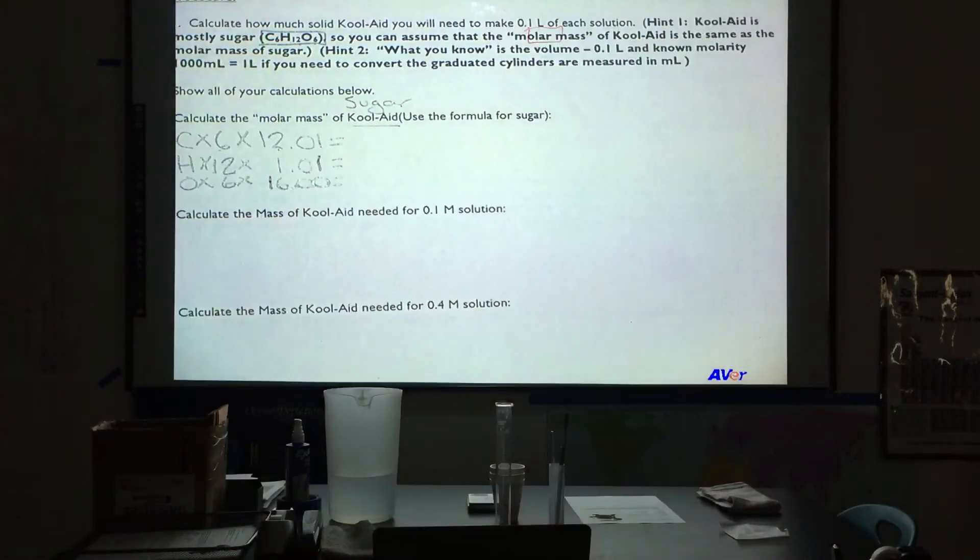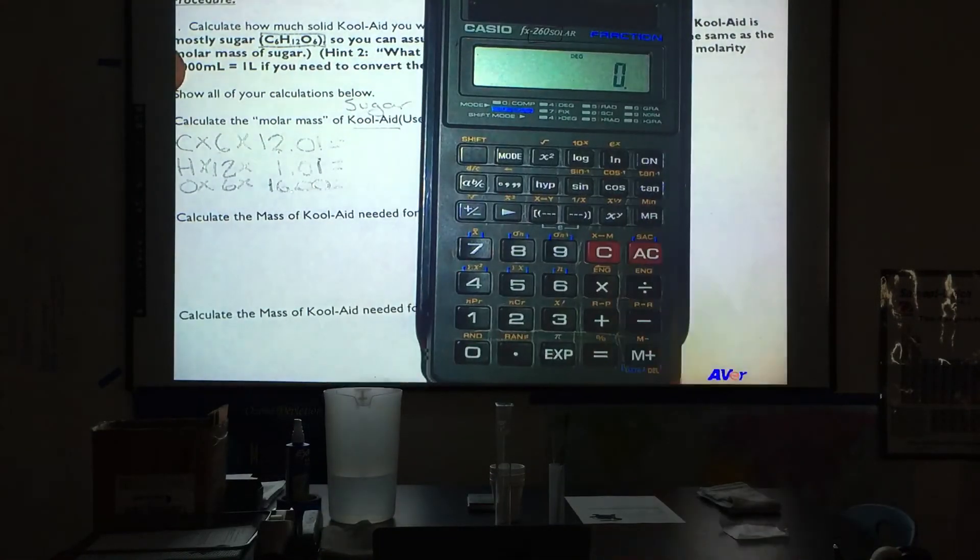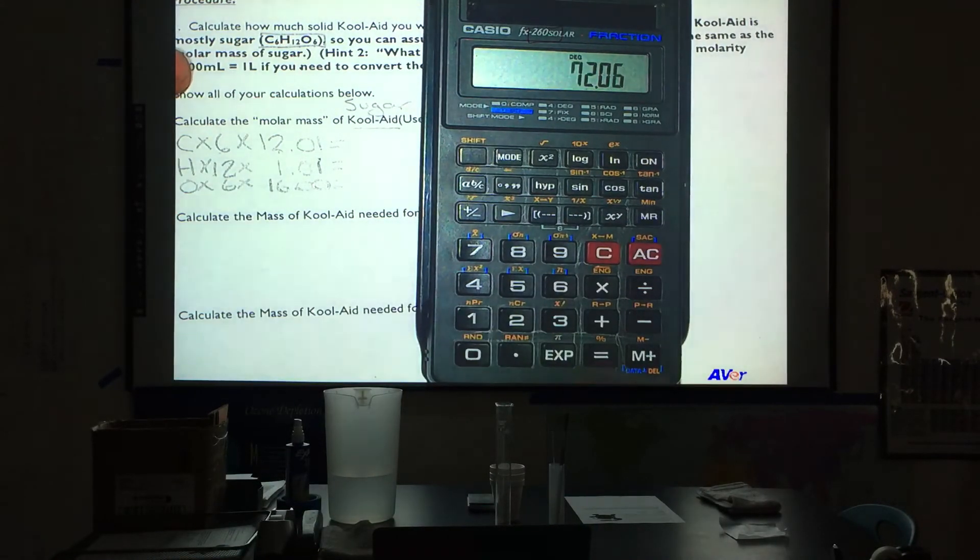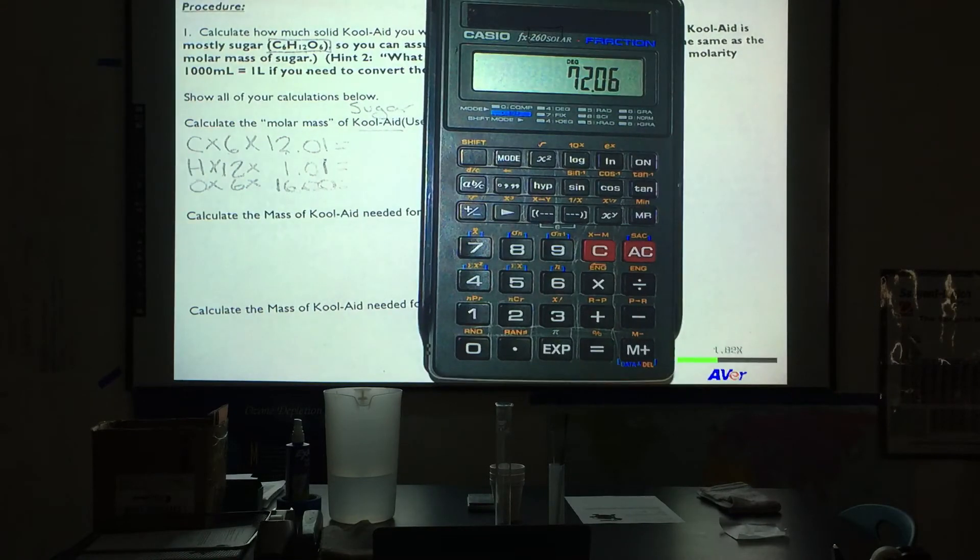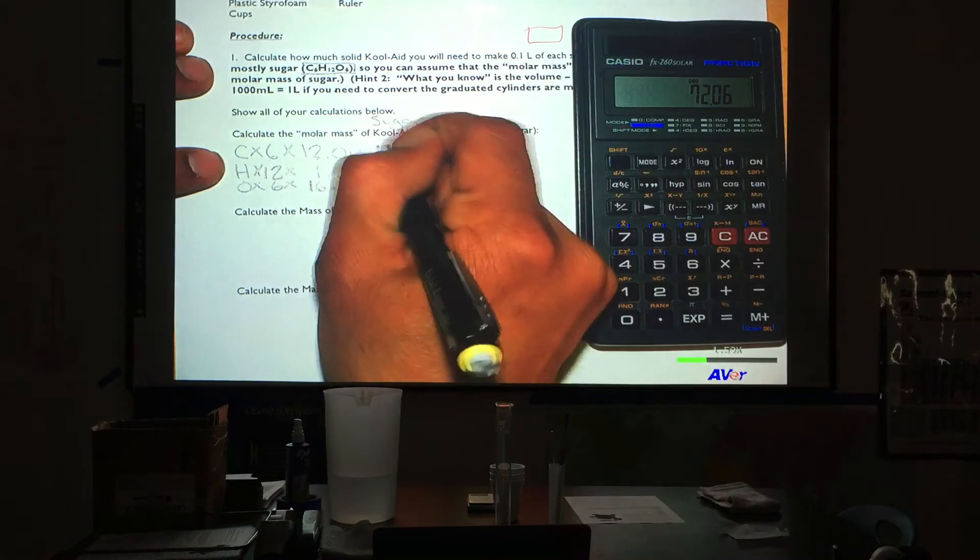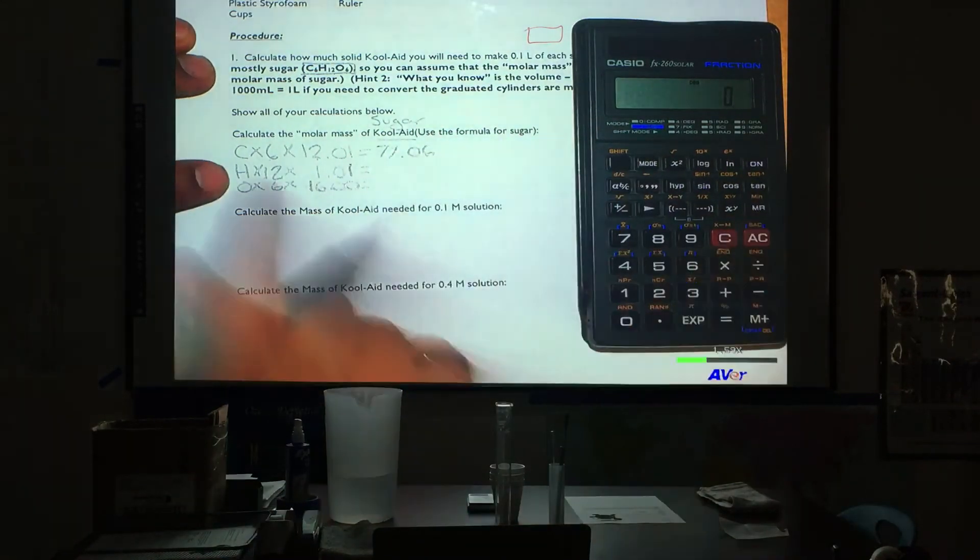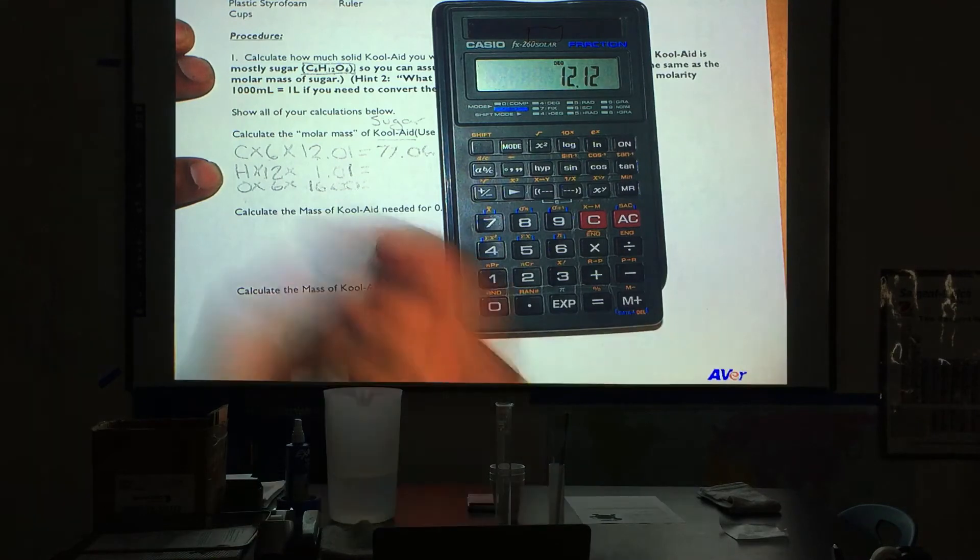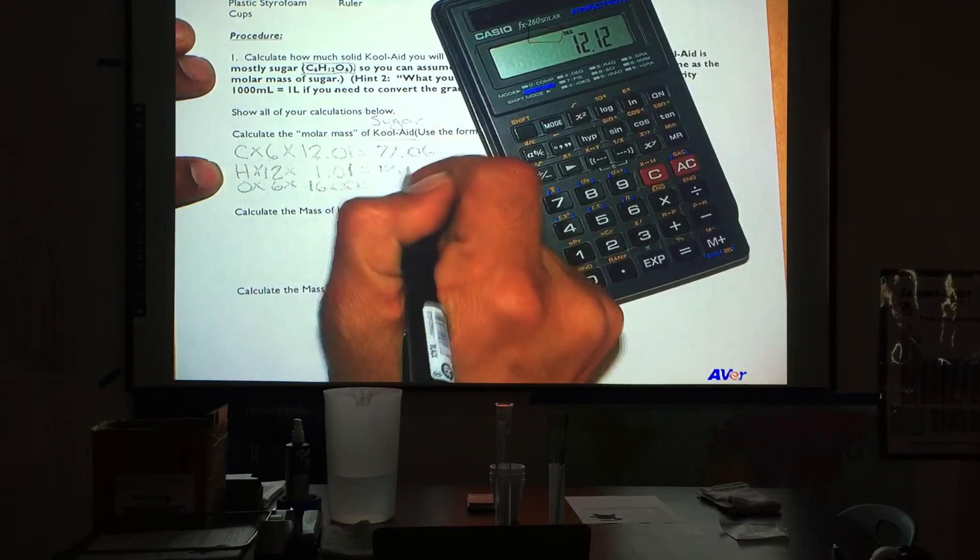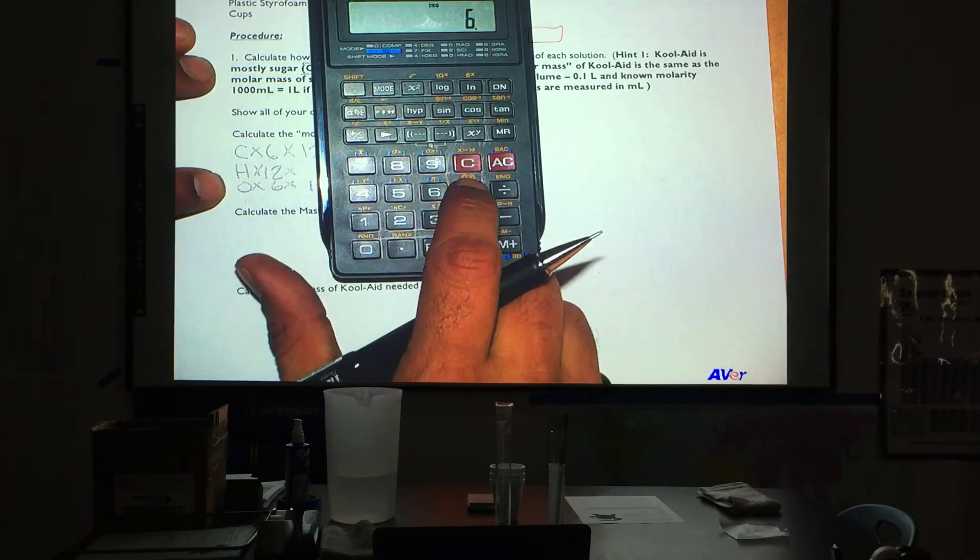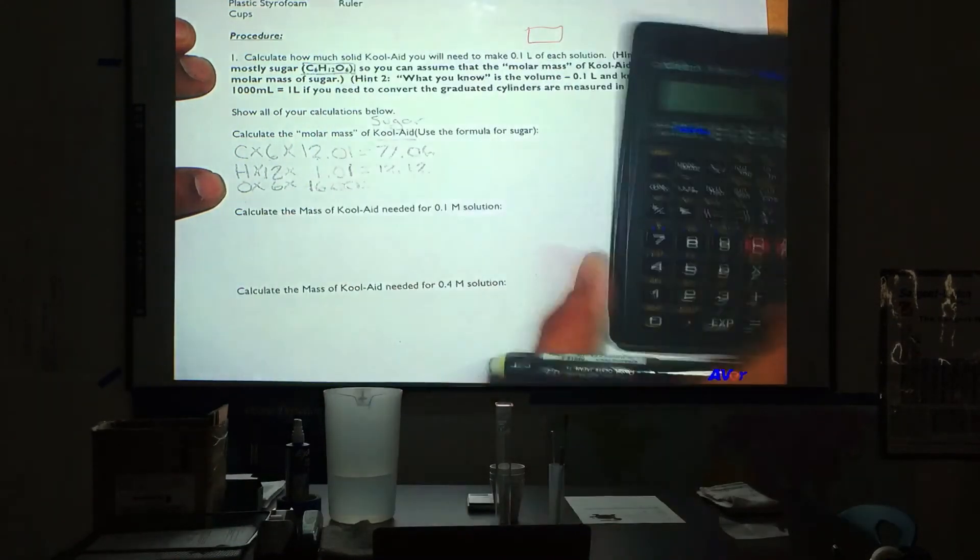Okay, we'll go ahead and add all this up. So we have 6 times that 12, and that equals 72.06. We will add our 12 times 1.01 for hydrogen. We will end up with 12.12. 6 times 16. Again, 6 times 16 equals 96.